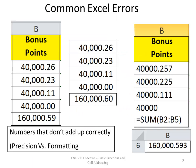Here's another error you may encounter. In column B you have values for bonus points: 40,026 cents, 40,023 cents, etc. The last cell says 160,059 cents — in that cell we're actually doing a sum function. But if you truly add those values up as you see them, it should come to 160,060. So you may think Excel has an error; there are bugs in Excel, but normally it's user error.